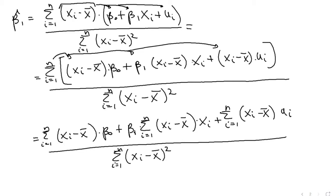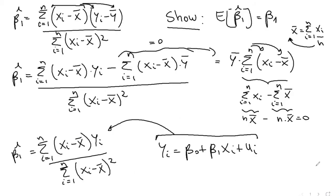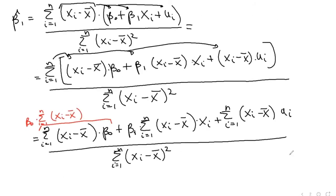Notice that β₀ is just a number — the same in every term of the summation — so we can pull it out. This gives β₀ times the sum of (xᵢ minus x̄), which we already showed equals 0. So that entire first term disappears.